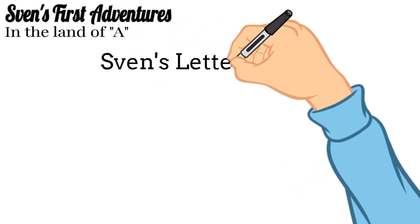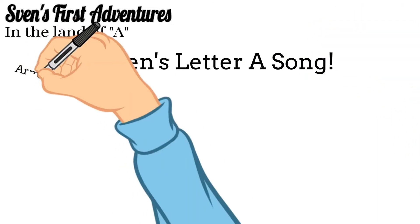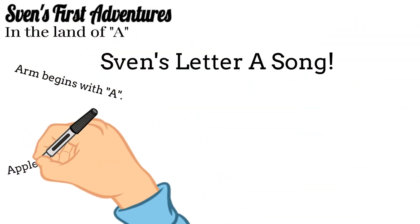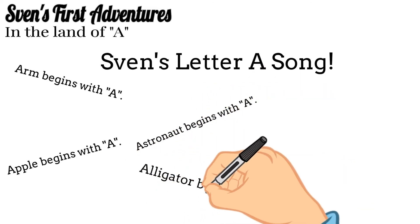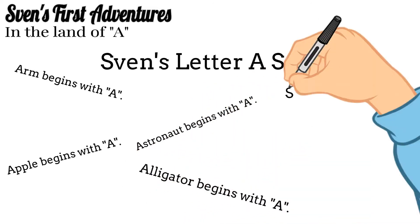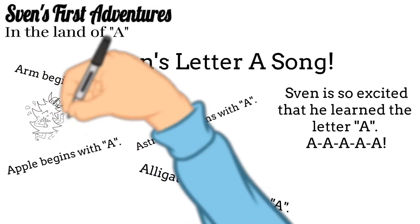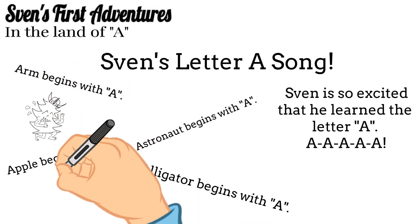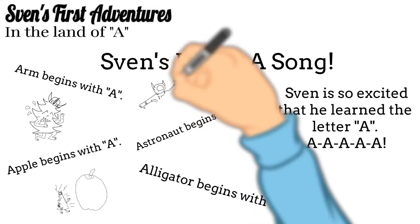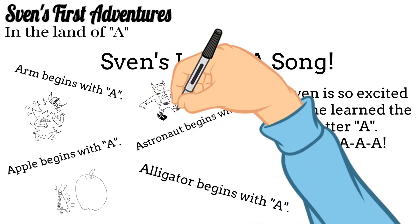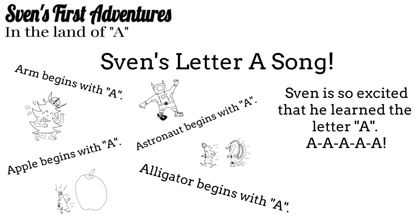And now, please join me in singing Sven's letter A song. Arm begins with A. Apple begins with A. Astronaut begins with A. Alligator begins with A. Sven's so excited that he learned the letter A. A, A, A, A.